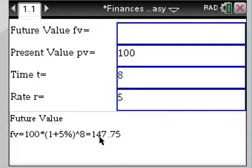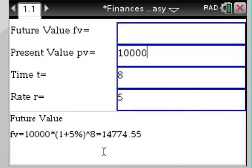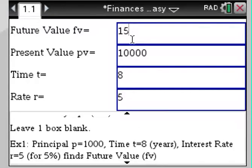You see the future value here is $147.75. If you change the present value to let's say $1,000, notice in the bottom, or $10,000, notice how you immediately get the correct future value computed.